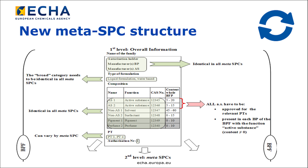The family structure is organized into three parts. The first one contains the basic common overall information where the authorization holder, manufacturer, formulation types, composition, and product types of the biocidal product family are included.